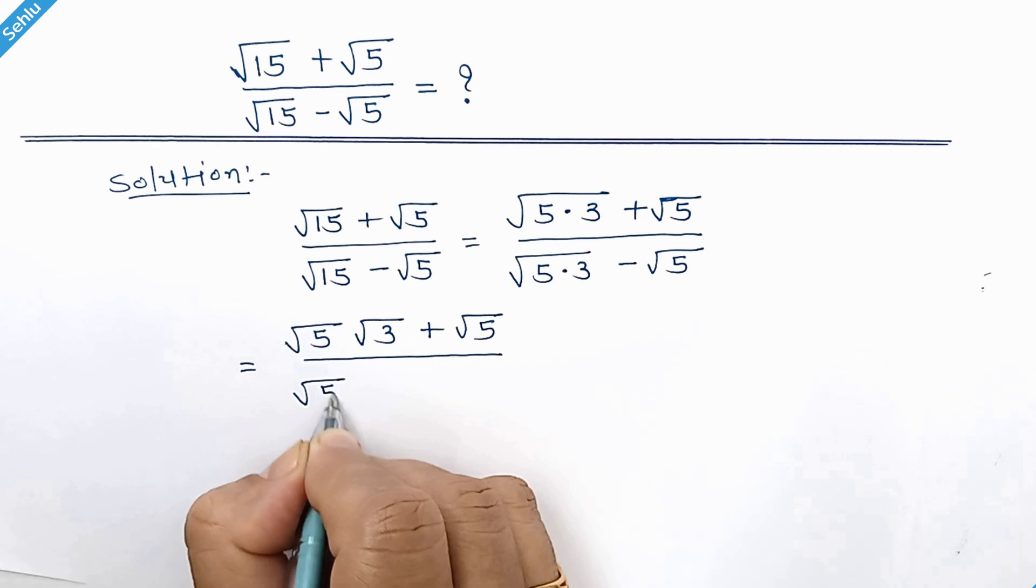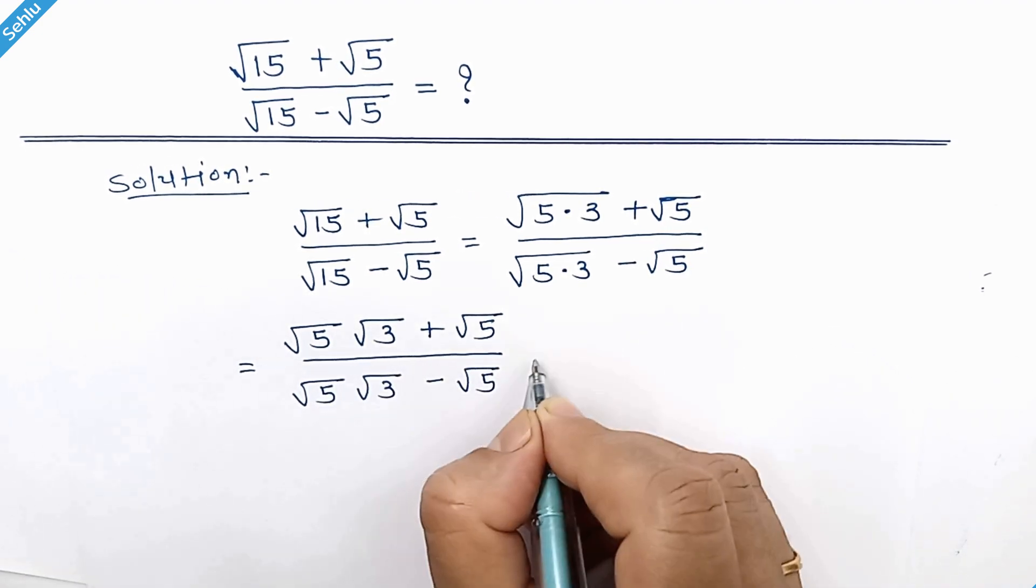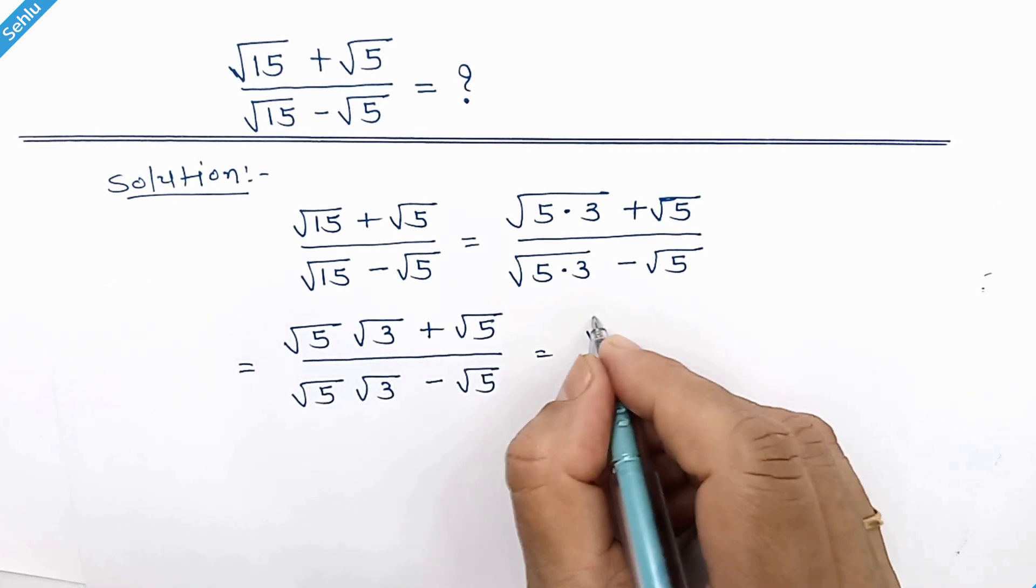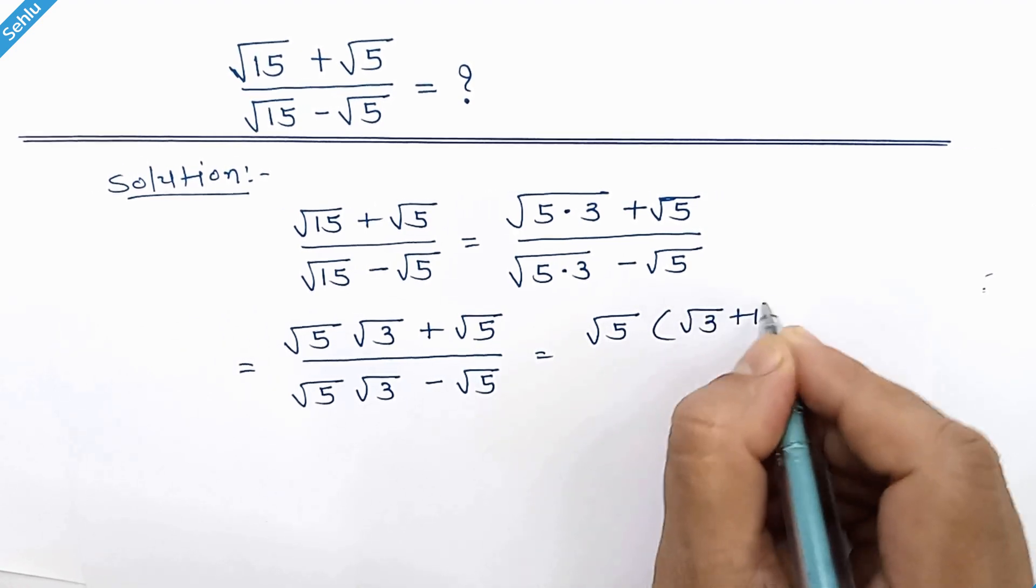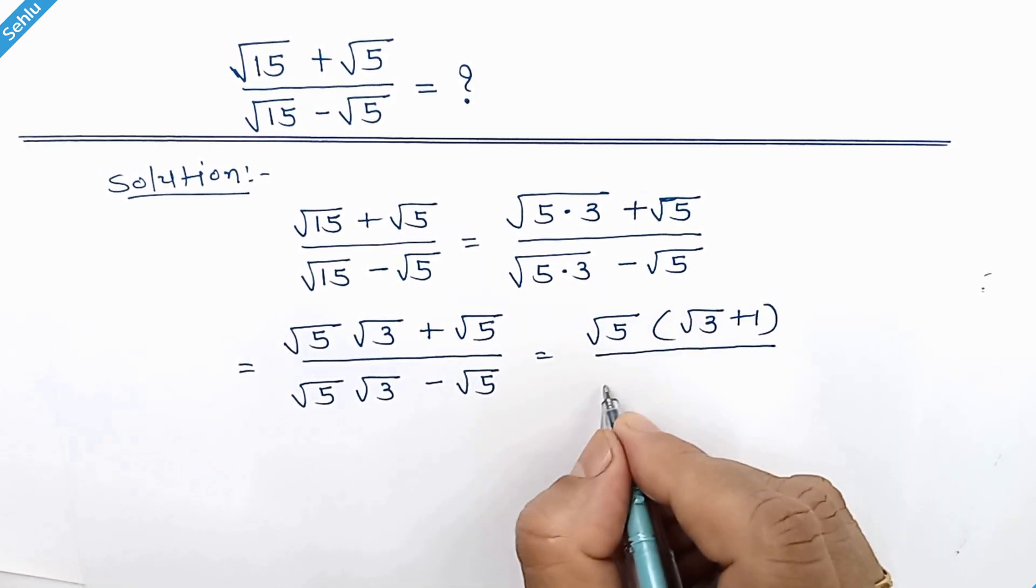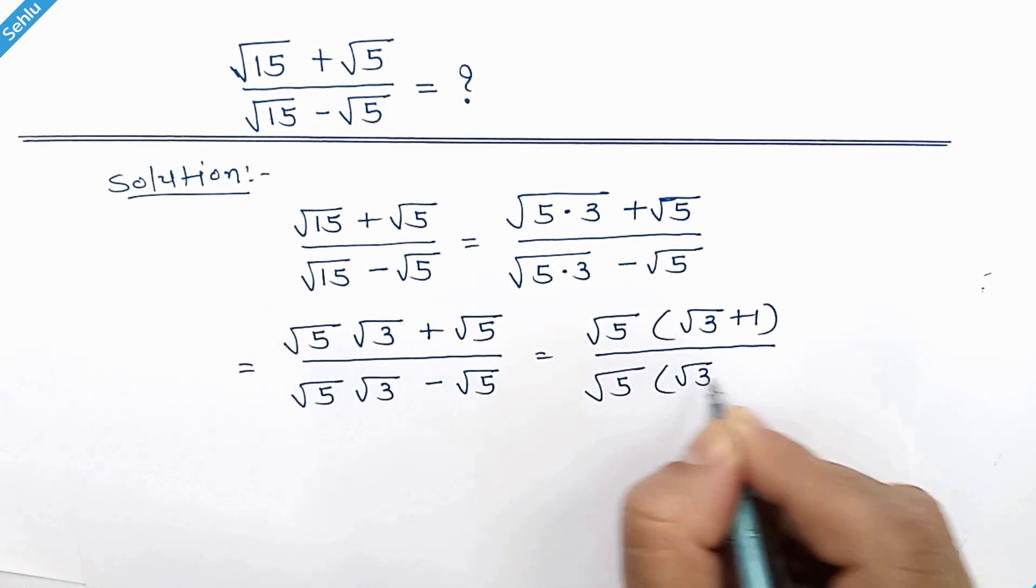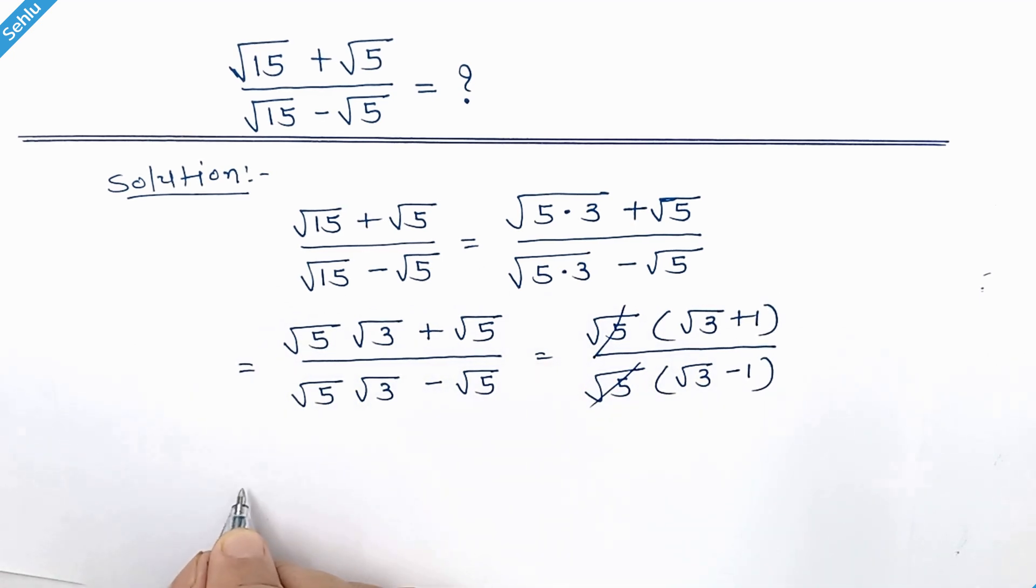Over square root 5 times square root 3 minus square root 5. Taking square root 5 common, so this two will eliminate each other.